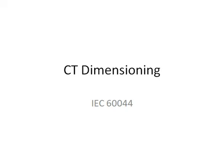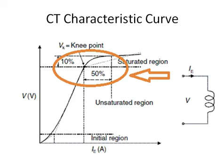Welcome to my YouTube channel Electric World Continuing Engineering. Today I am going to discuss CT dimensioning as per IEC 60044. During a transient fault condition in a power system network, if the CT gets saturated it will definitely maloperate — it will not give proper functionality. As you can see from the CT characteristic curve, up to a certain point the CT will operate properly, but after that point it will maloperate after getting saturated.